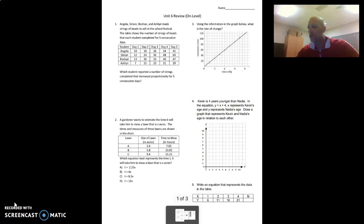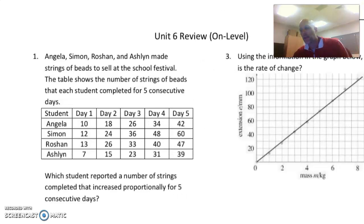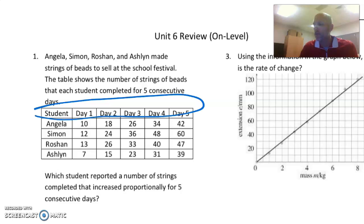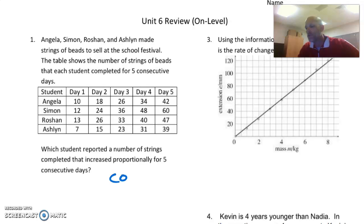Alright, here's your review. Now let's start with number one. Angela, Simon, Roshan, and Ashlyn made strings of beads to sell at the school festival. The table shows the number of strings of beads that each student completed for five consecutive days. We've got students here, and day one, two, three, four, and five on the top. What student reported a number of strings completed that increased proportionally for five consecutive days? Remember,